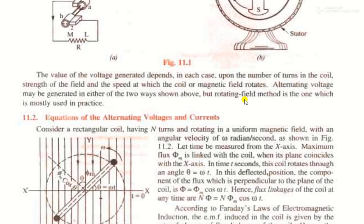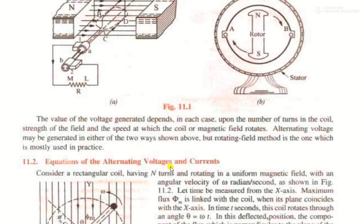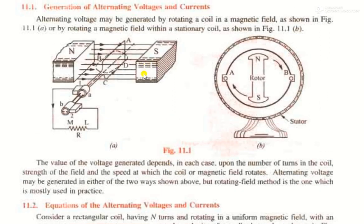Now we will discuss the construction of the alternator and then the equation. From a construction point of view, the figure shows an elementary alternator. As already mentioned, AC generators are commonly called alternators. It consists of a single turn of a rectangular coil, with edges nominated as A, B, C, D, which is made up of a conducting material like copper or aluminum.